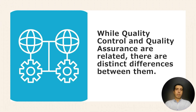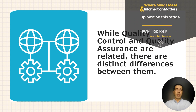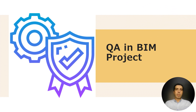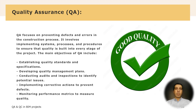Are quality control and quality assurance the same, or are they different things? They are two different things but they are related to each other. Quality assurance focuses on preventing defects and errors in the process. It involves implementing systems, processes, and procedures to ensure that quality is built into every stage of the project.